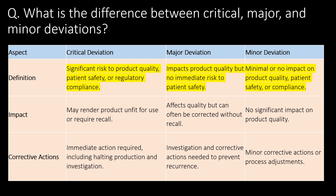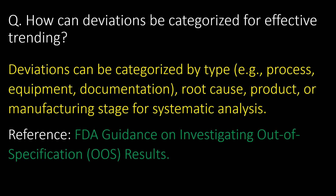Very basic and important question: what is the difference between critical, major, and minor deviations? You can refer to the following to differentiate. Critical deviations have significant risk to product quality, patient safety, or regulatory compliance. Major deviations have impacts on product quality but no immediate risk to patient safety. Minor deviations have minimal or no impact on product quality, patient safety, or compliance.